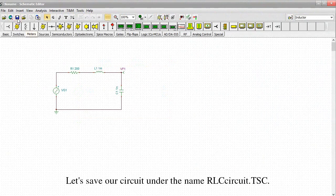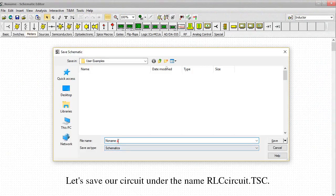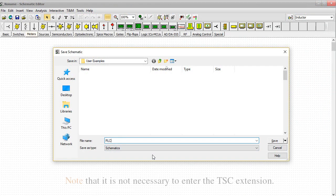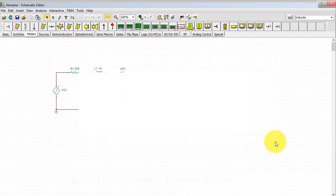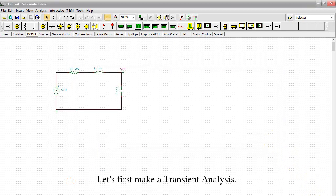OK, let's save our circuit under the name RLCCircuit.TSC. Note that it is not necessary to enter the TSC extension. Let's first make a transient analysis.